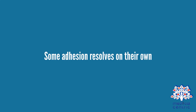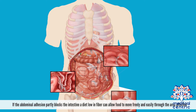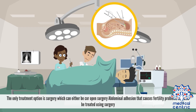Treatment. Some adhesions resolve on their own. If the abdominal adhesion partly blocks the intestine, a diet low in fiber can allow food to move freely and easily through the affected area. Complete intestinal obstruction usually requires immediate medical attention, and the only treatment option is surgery, which can either be laparoscopic or open surgery. Abdominal adhesions that cause fertility problems can also be treated using surgery.